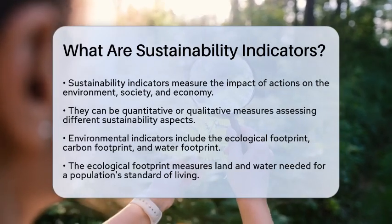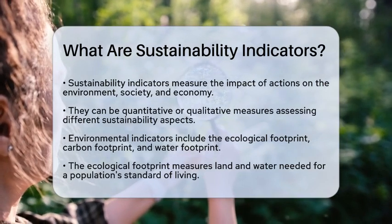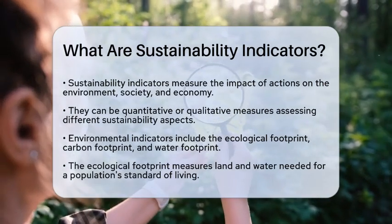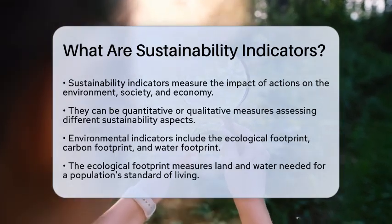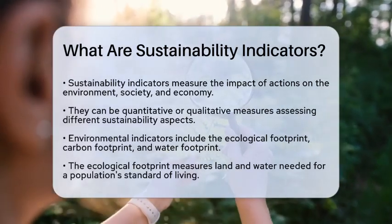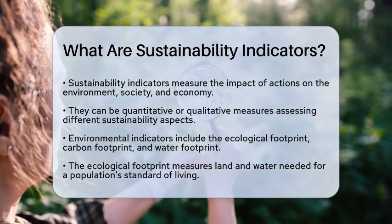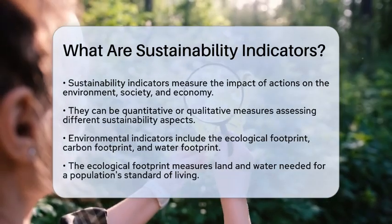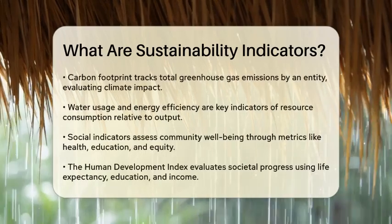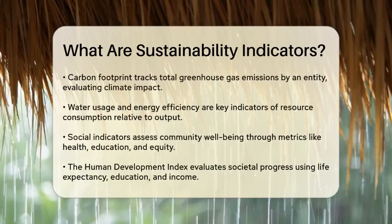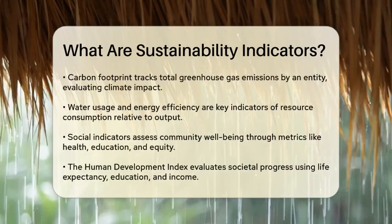On the environmental side, indicators like the ecological footprint, carbon footprint, and water footprint are commonly used. The ecological footprint, for example, measures the area of land and water needed to support a specific population at a particular standard of living. It's calculated in global hectares per person per year and takes into account resources consumed, such as food, energy, and materials, as well as the waste generated and the ecosystem services required to absorb that waste.